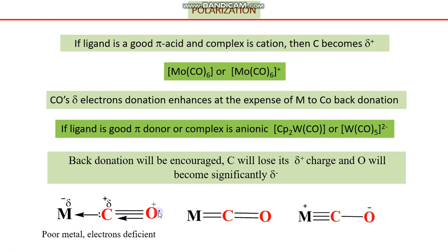However, because of the electronic nature of metal and carbon, it does not allow them to establish another bond — because metal does not have electrons in its d orbital to donate to carbon. Therefore, this metal is regarded as an electron-deficient or electron-poor species. In this case, electron density is shifted from carbon to metal, and as a result, the metal now possesses a partial negative charge because electron density has increased on the metal.